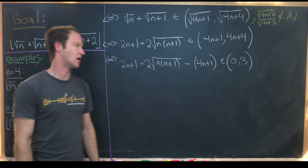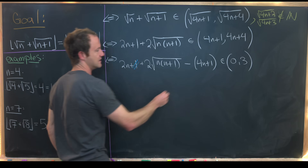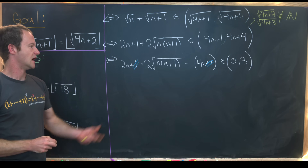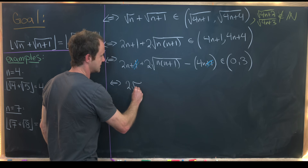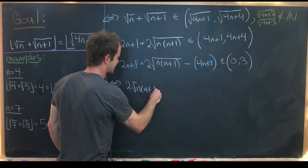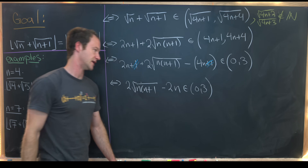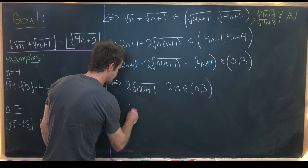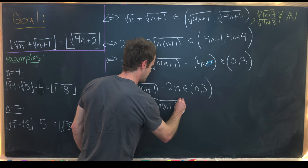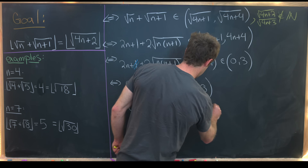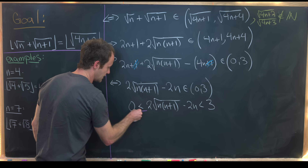Let's simplify. The +1 and -1 cancel, and 2n - 4n = -2n, so we need to show that 2√(n(n+1)) - 2n lies in the interval (0, 3). In other words, we need to show both that 0 < 2√(n(n+1)) - 2n and that 2√(n(n+1)) - 2n < 3. We'll tackle each inequality separately.